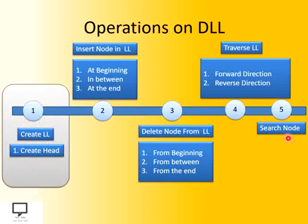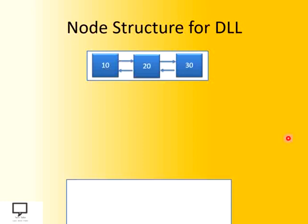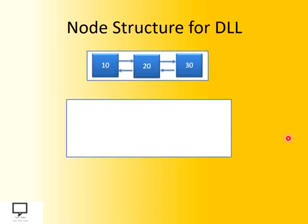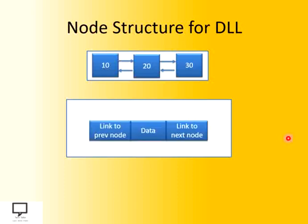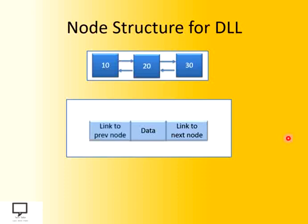In this video session, we will see how to create a doubly linked list. The rest of the operations we will see one by one in separate videos. Let's first see the node structure of a DLL, then we will move to the create operation. As explained, the node is divided into three parts: the first one is the data or information part, the second one is the link to the next node — also called the next field — and the third one is the link or pointer to the previous node, also called the previous field.